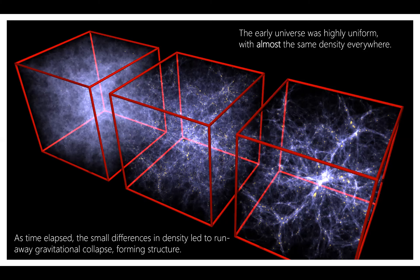Regions that are slightly more dense exert a larger gravitational pull, so they pull more matter towards them. As they do, they get even more dense and develop an even stronger gravitational pull — a runaway process where the more dense regions become ever more dense, and the underdense regions become big voids. In the simulation here, moving from left to right shows early to late universe, and this is real physics, not just animation.